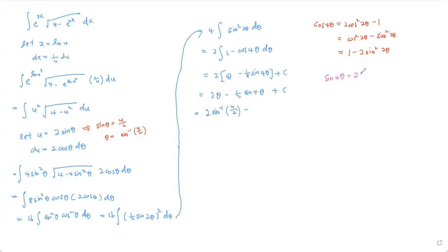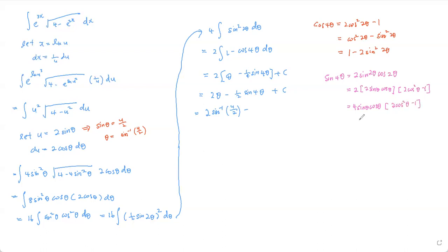So sin4θ = 2 · (2sinθ cosθ) · cos2θ. Using cos2θ = 2cos²θ − 1, this becomes 4sinθ cosθ · (2cos²θ − 1), which simplifies to 8sinθ cos³θ − 4sinθ cosθ. We know sinθ = u/2, so we need to find cosθ.